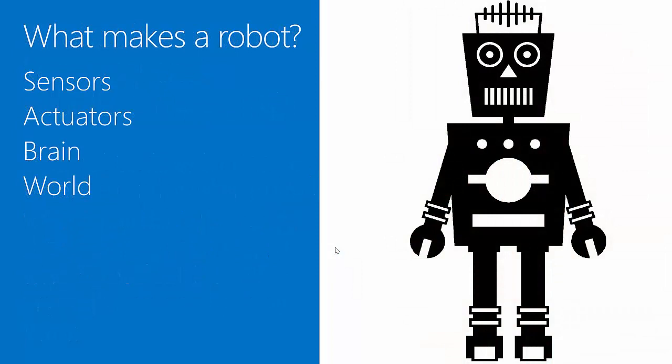So, what makes a robot? A house is not going to stand up and walk around the neighborhood. But it does, like a robot, have sensors and actuators, a world, and can be given a brain.